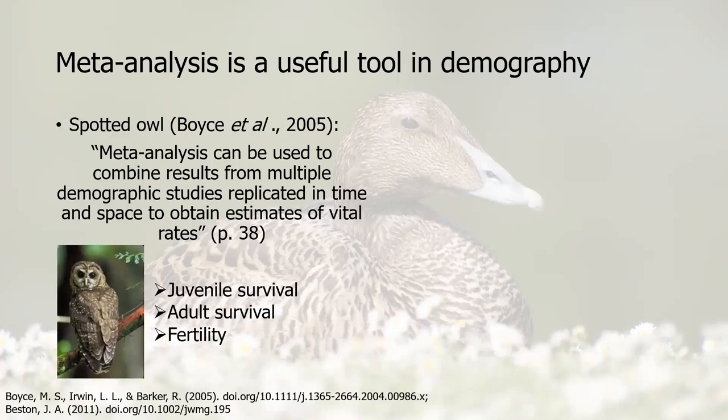Meta-analysis is a useful tool in demography — the study of populations and what makes them up. For example, this study of the spotted owl by Boyce and colleagues states that meta-analysis can be used to combine results from multiple demographic studies replicated in time and space to obtain estimates of vital rates. In this case the vital rates they're interested in are juvenile survival, adult survival, and fertility.